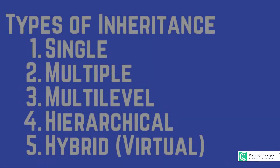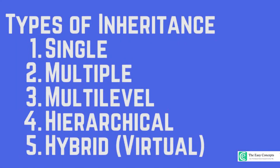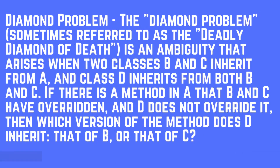Hello everyone, welcome back to the series of tutorials on C++. I am Deepak Unyal. In the previous tutorial we discussed various types of inheritance — single inheritance, multiple inheritance, multi-level inheritance, hierarchical and hybrid. After that we discussed a problem called the diamond problem or deadly diamond of death, which basically arises when we are using multiple inheritance, and it's an ambiguity that arises when two classes B and C